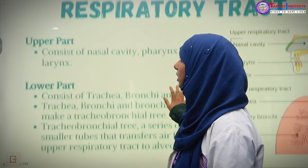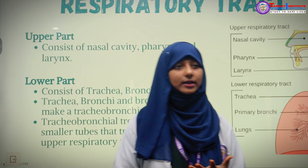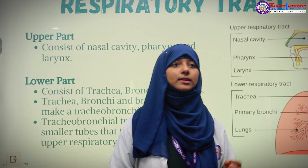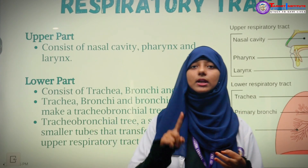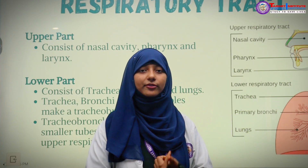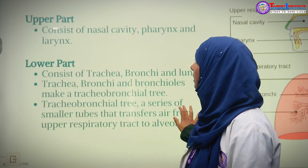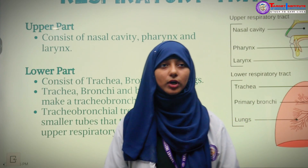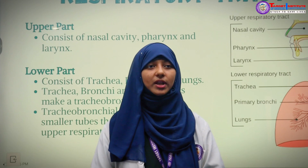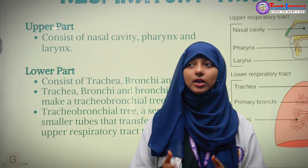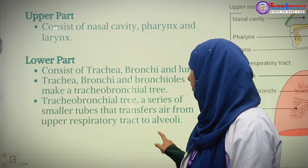From the nose to the lungs there is a tract called the respiratory tract. If we divide it into two parts, the upper part consists of nose, nostrils, nasal cavity, larynx, and pharynx, which helps with intake of air. The lower part consists of trachea, bronchi, and lungs. Trachea, bronchi, and bronchus make up a tracheobronchial tree — a series of small tubes that transfer air from the upper respiratory tract down to the alveoli.